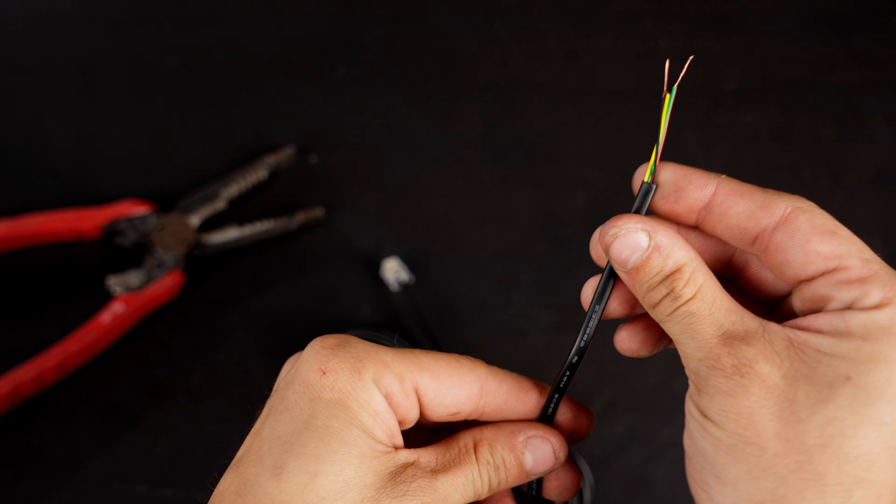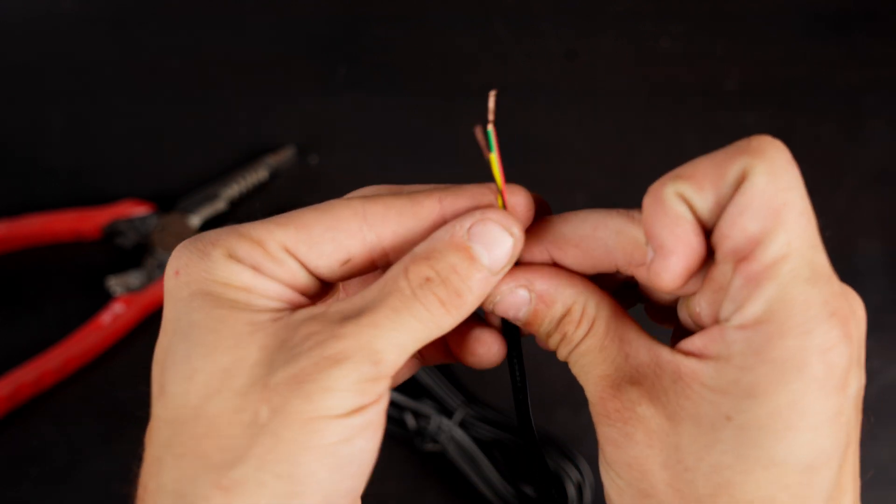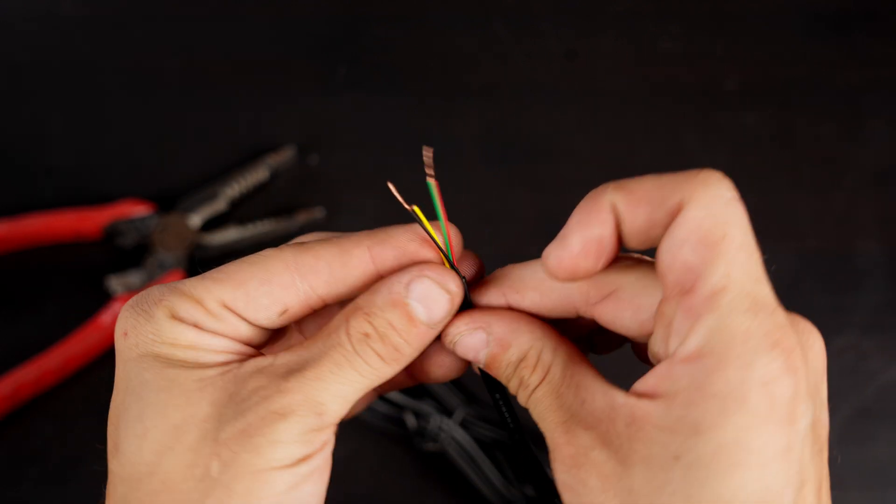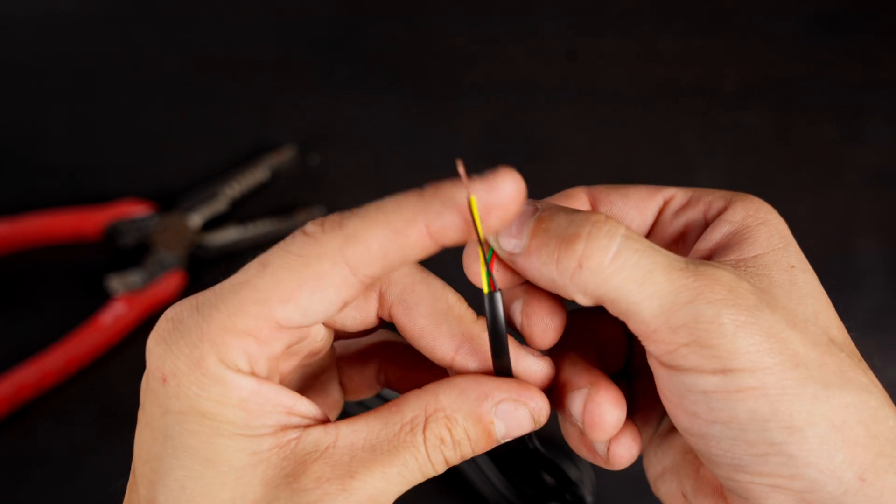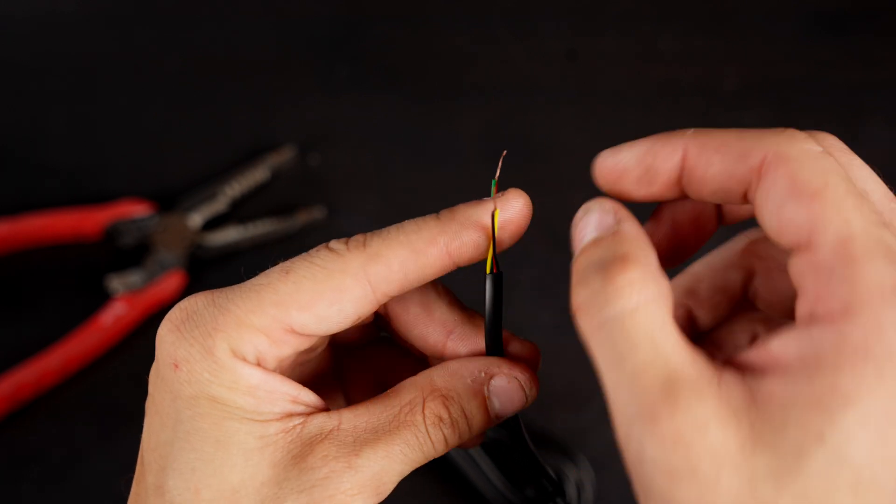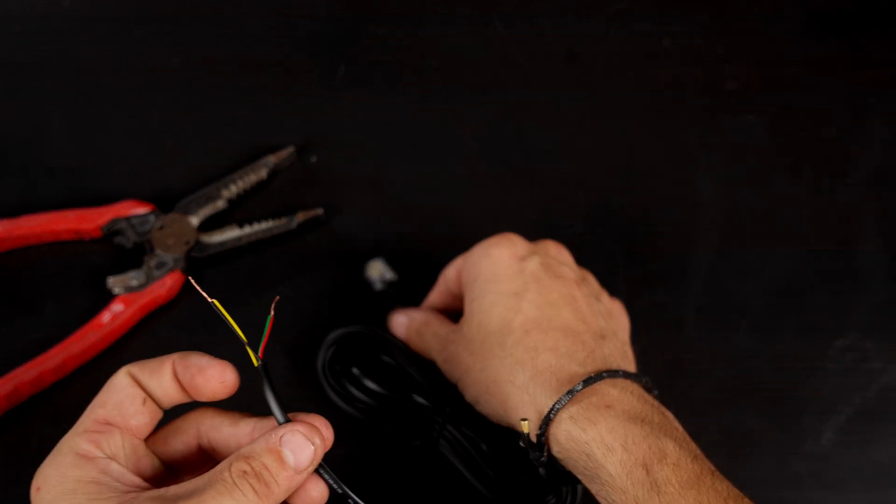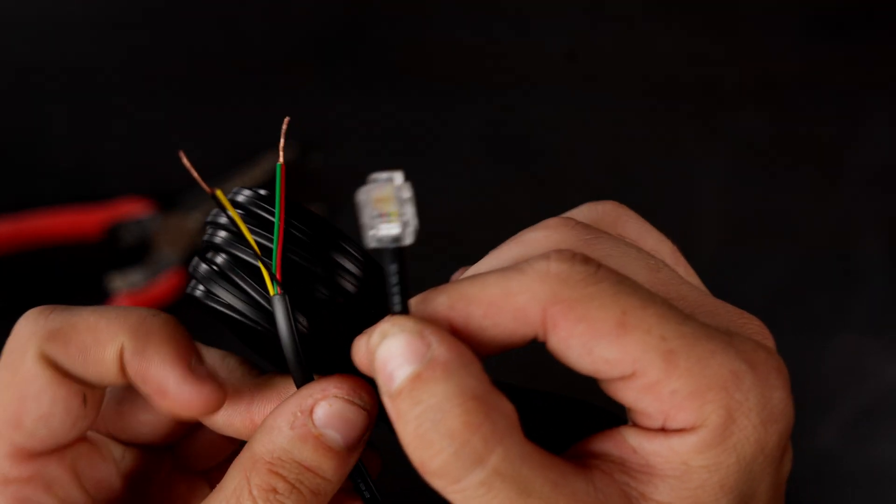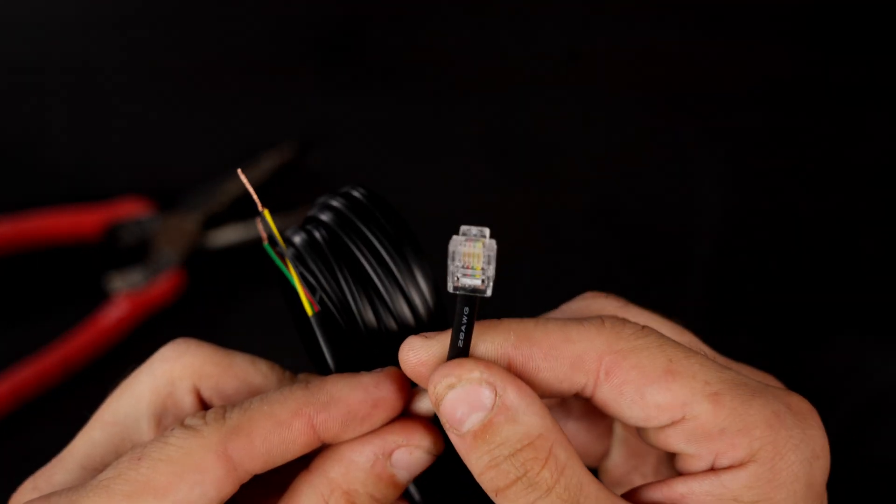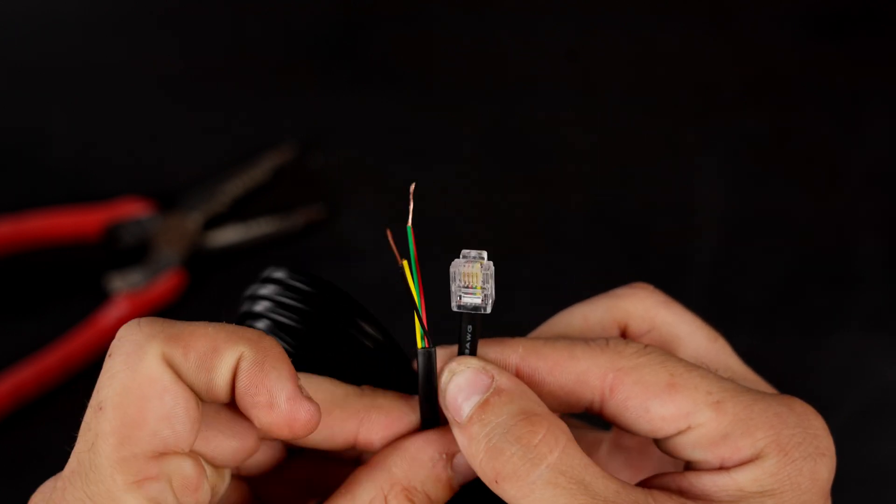Keep in mind that RJ11 won't always be these color combinations. You could have different colors, but always know that it'll be the outer two wires connected and then the inner two wires connected. You can always look at the other end that'll connect to the Faven lights and check to make sure that you have the right ones.